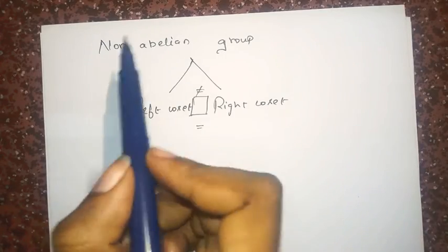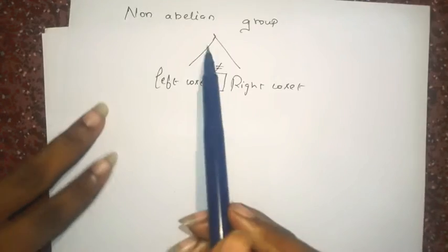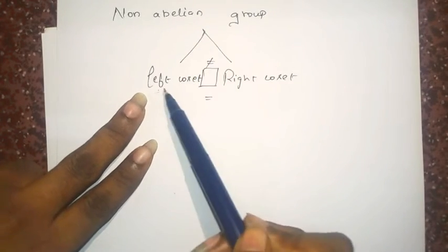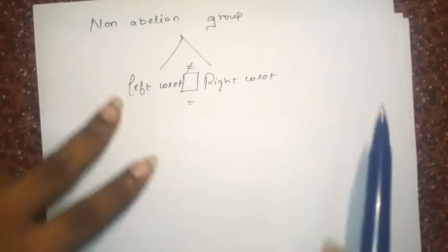In our today's class, we will take a non-abelian group and you will find the left coset of it and right coset of it. You will find the relation whether it is equal to or not equal.